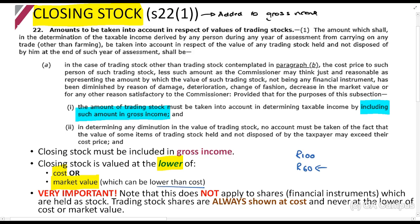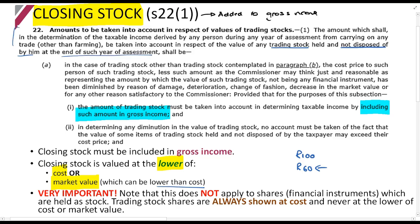Let's read Section 22(1): 'The amount which shall, in the determination of the taxable income for any person during any year of assessment from carrying on any trade, be taken into account in respect of the value of any trading stock held and not disposed of by him at the end of such year of assessment' — so this refers to closing stock.